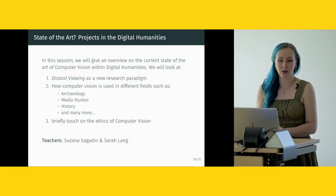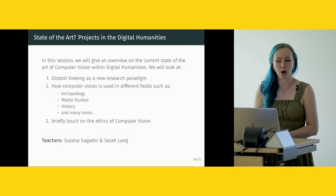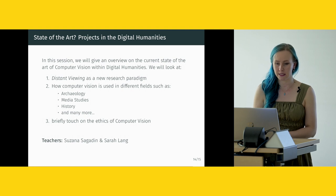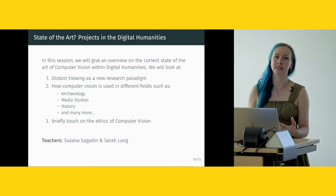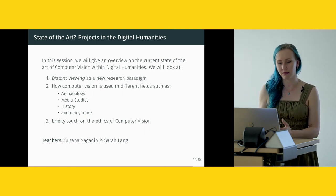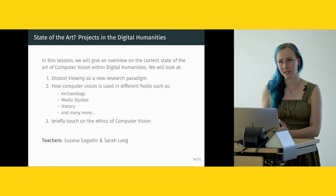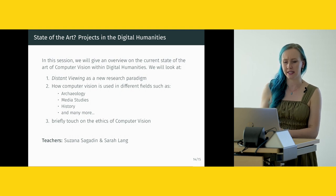Towards the end of the school we will look into applications of computer vision in the digital humanities. The talk called State of the Art Projects in the Digital Humanities provides a literature review on the current state of computer vision in the field. We will look at distant viewing as a new research paradigm comparable to distant reading and text analysis, and see how computer vision is used in archaeology, media studies, history, and more. We will also briefly touch on the ethics of computer vision.